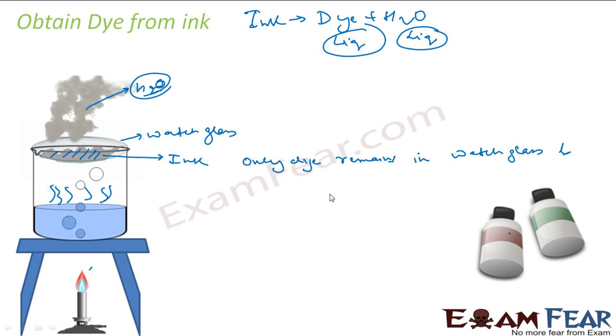So only dye remains in watch glass. But actually if you want to conserve this water, then you have to use some other apparatus where this water is getting stored and then it is cooled to get water. The same apparatus which we use in distillation, we can do that as well. But not required here.